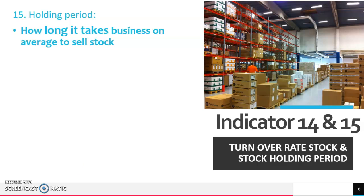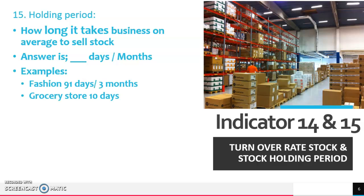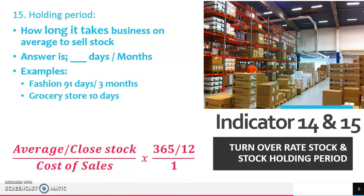Indicator 15 is the stock holding period — how long on average does it take to sell the stock? The answer is in days or months. Fashion takes about 91 days; a grocery store only 10 days. Interestingly, you switch the formula from indicator 14: average stock goes to the top and cost of sales goes to the bottom, multiplied by 365 days. Default to average stock unless they specifically ask for closing stock, and default to 365 days unless they want months, in which case use 12.